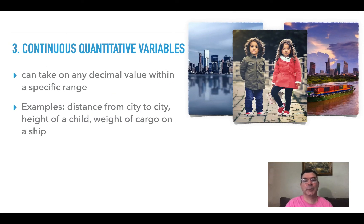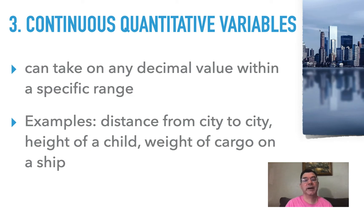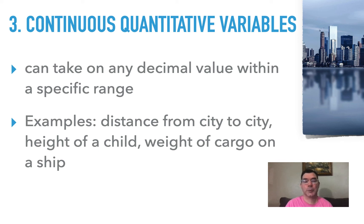The last type of variable is what's called a continuous quantitative variable. Continuous is kind of the opposite of discrete because now we can take on decimal values within a certain range. For example, if we were talking about a distance from city to city, you might round that to the nearest mile, but you know that distance is on a continuum. The same thing with the height of a child — we might round to the nearest inch or centimeter, but you could easily take that to more decimal places. And the same with the weight of cargo on a ship — you might round to the nearest kilogram or ton, but again it's something on a continuum.